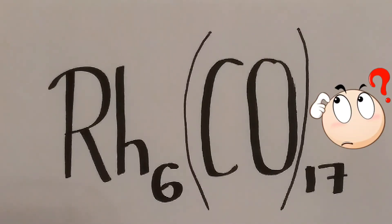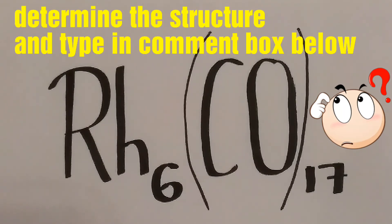Please calculate the total valence electron, then divide by 14. And by looking at the remainder, please determine the structure and type in the comment box below.